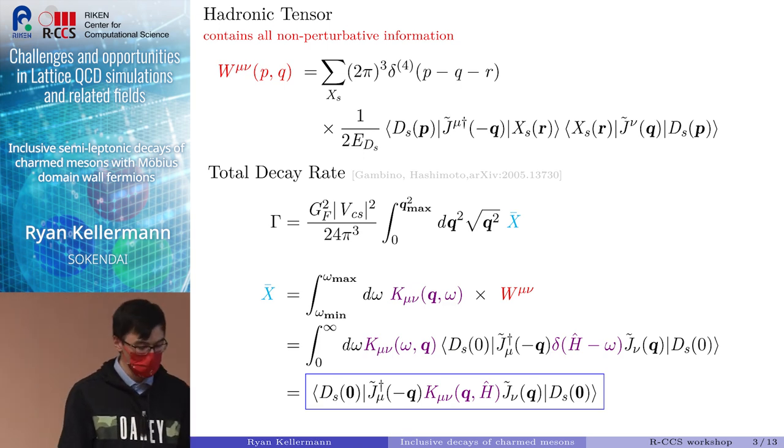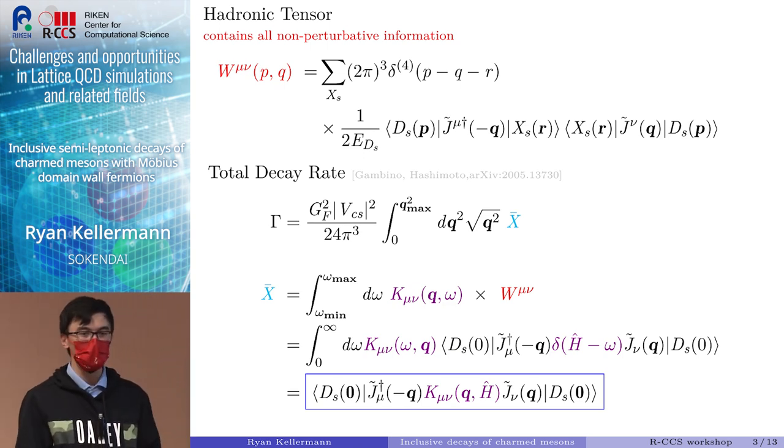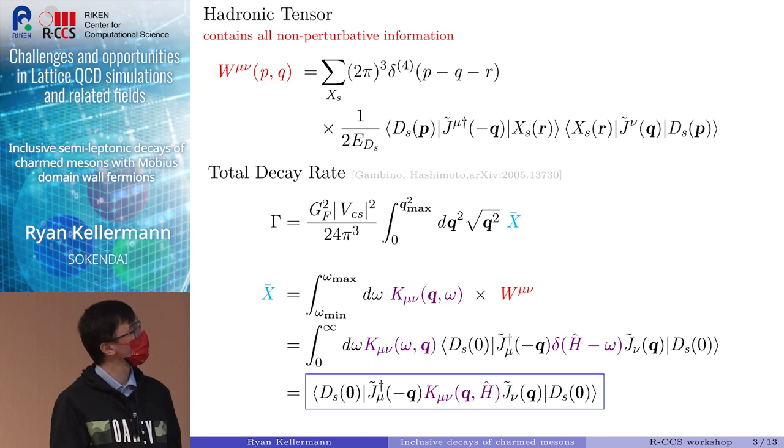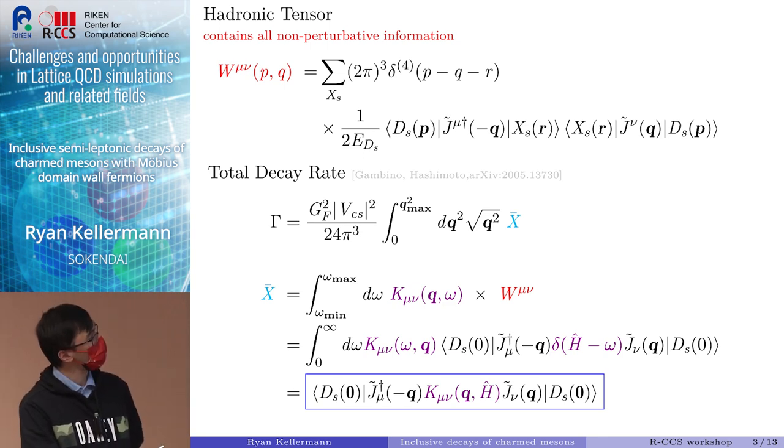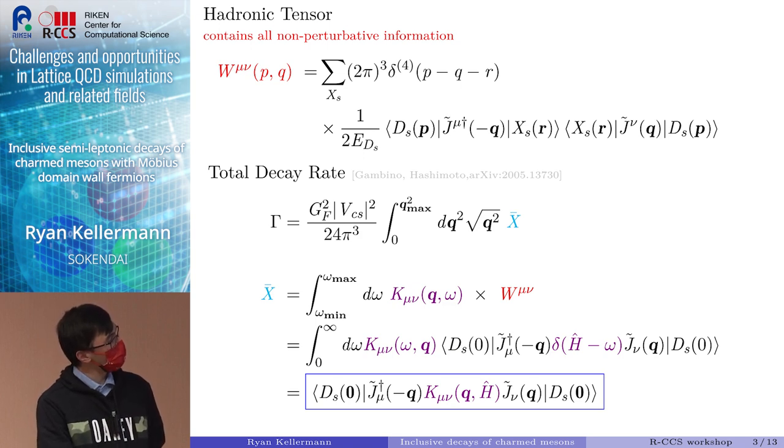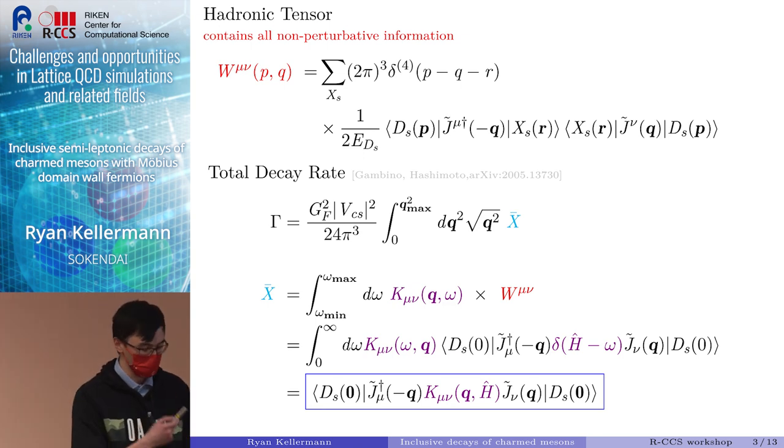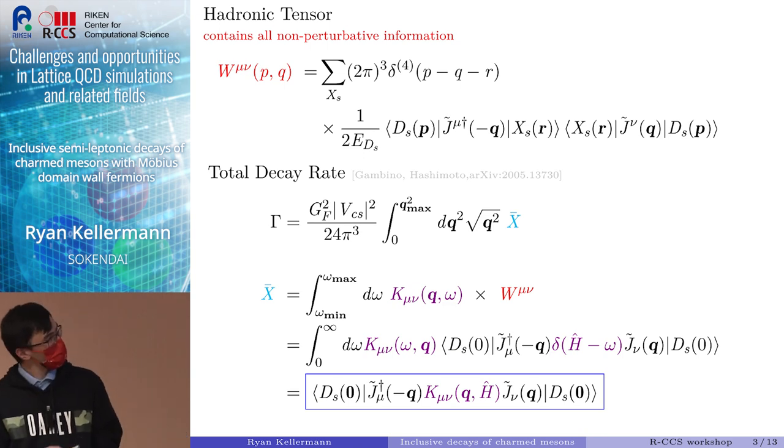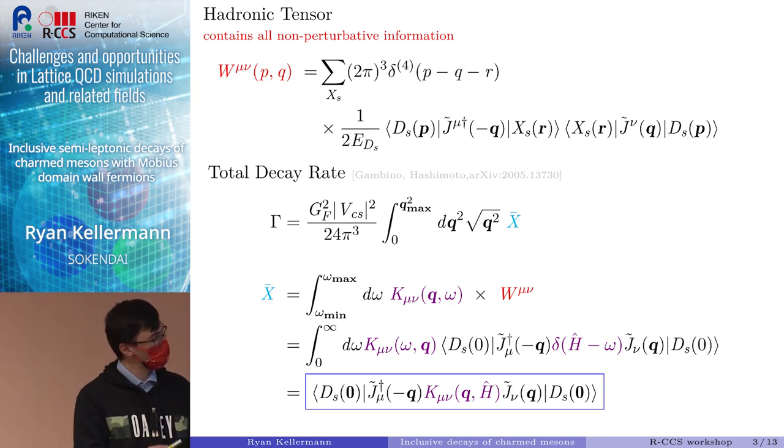As per usual, the object that's giving us trouble and we somehow have to approximate is the hadronic tensor, which contains all the non-perturbative information. In this case, I've already inserted the complete set of states, but this is really just to show what it looks like.